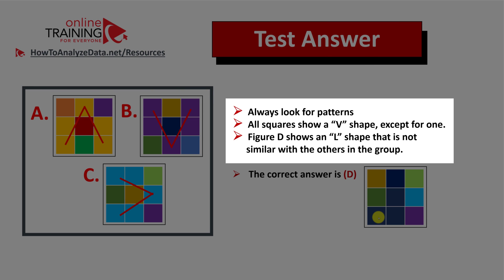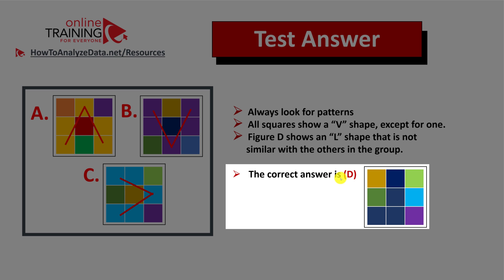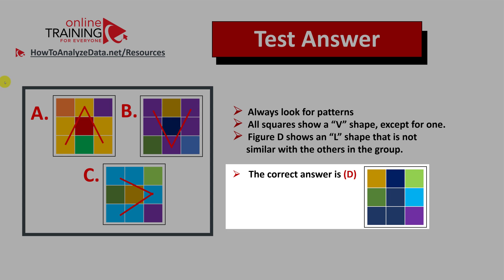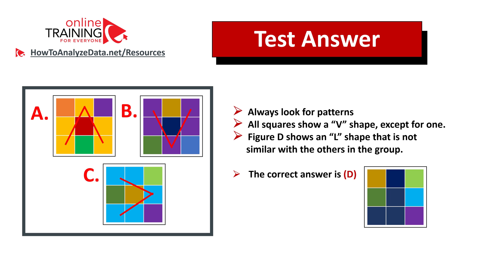So the correct answer here is choice D. Let's recap: always look for patterns. All squares show a V shape with the exception of one. Figure D shows a reverted L shape which is not similar with the others. Hopefully you've nailed this question and now know how to answer similar problems on the test.